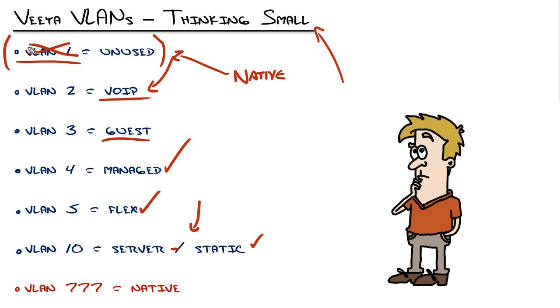For that reason, VLAN 1 should not be used. You can't delete it, you can't rename it. The only thing you can choose to do is to move everything out of VLAN 1.